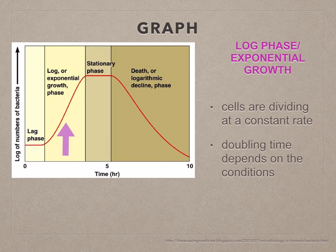During the log phase, the cells are dividing at a constant rate. The generation time or doubling time depends on the conditions and will define this phase.